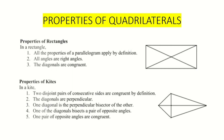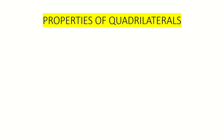For the properties of a kite: number one, two disjoint pairs of consecutive sides are congruent by definition; number two, the diagonals are perpendicular; number three, one diagonal is the perpendicular bisector of the other; number four, one of the diagonals bisects a pair of opposite angles; and number five, one pair of opposite angles are congruent.